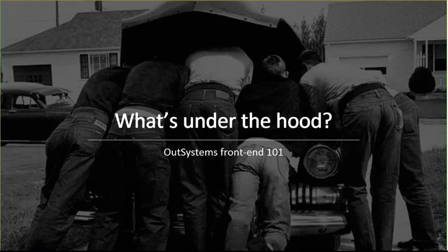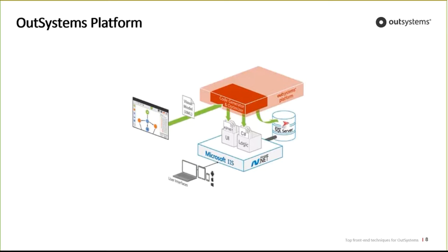Moving to the first chapter: OutSystems Frontend 101. In OutSystems you work with Service Studio, which is the IDE. Under the hood, Service Studio creates an XML file called the OML — OutSystems Module Language. When you click publish, this module is sent to the server where code is generated for the database, the logic, and the UI, and then it runs on different servers — in this example, the Microsoft server.